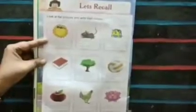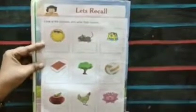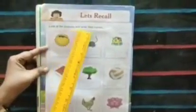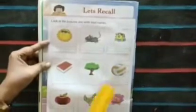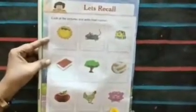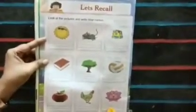This is your English reader book page number 6. Topic is look at the pictures and write their names. You have to look at the picture and write the names. I am going to teach you using the blackboard.